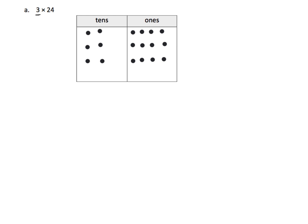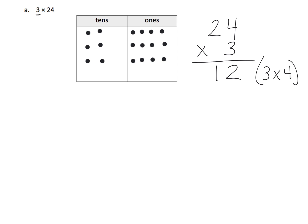Let's write that down. Here's our 24 times 3. What do we have? Right here we have three groups of four ones, so this is 12 ones. We have 12, and that's because we have 3 times 4. And over here we have 6 tens. What's 6 tens? That's 60, and we have 60 because we have 3 times 20.